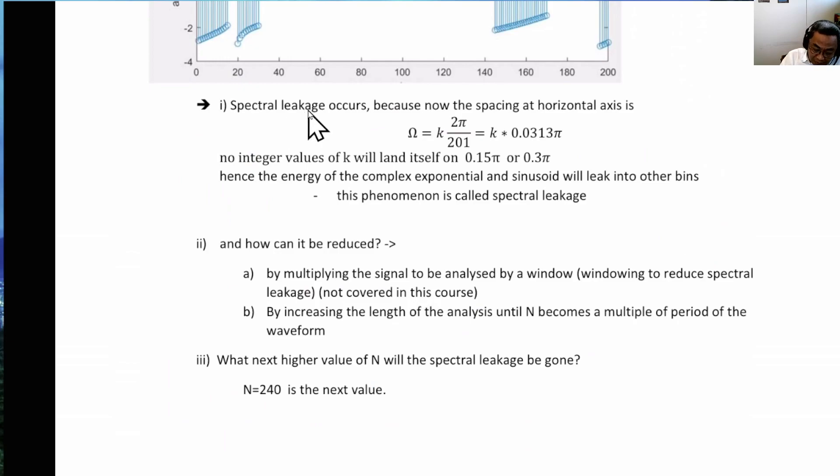So the answer is spectral leakage occurs because we could not get an integer value of k to achieve 0.15 pi or 0.3 pi.